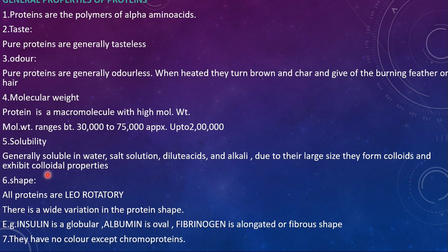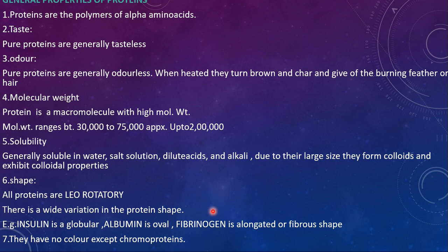Coming to shape, all proteins are levorotatory. As mentioned when discussing amino acids, the L indicates levorotatory and the D indicates dextrorotatory. Only L amino acids are the constituents of proteins, so all proteins are levorotatory. There is a wide variation in protein shape, and depending upon shape or structure we have different types of proteins — fibrous proteins, globular proteins, and so on.